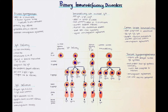Next we will talk about common variable immunodeficiency disorder. This type of primary immunodeficiency is often diagnosed in adults, unlike the other diseases we talked about previously, which are often discovered early in pediatric patients. Common variable immunodeficiency most often presents in the second or third decade of life or even later; however, children may also be affected.